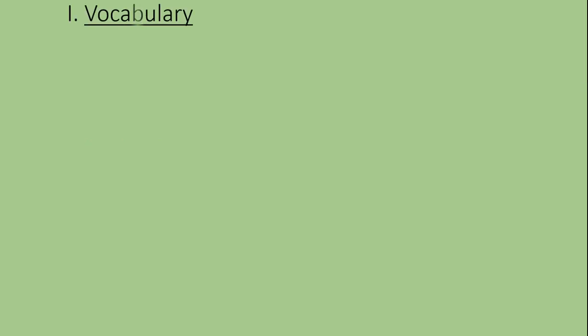Phần thứ nhất: Vocabulary. Từ thứ nhất là Ngọ Môn - đó là một danh từ, có nghĩa là cổng Ngọ Môn. Các em có thể xem hình cổng Ngọ Môn trong sách giáo khoa ở phần Getting Started, trang 98.